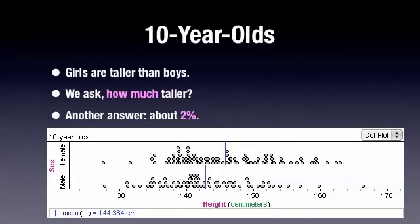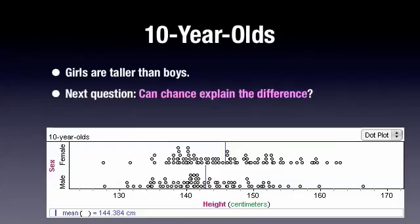So, now we're ready to look at the next question. And that, of course, is, can chance explain the difference? Could it just be the random assignment of the boys and the girls gave rise to a difference that is this large? The way we're going to find out, of course, is through scrambling.